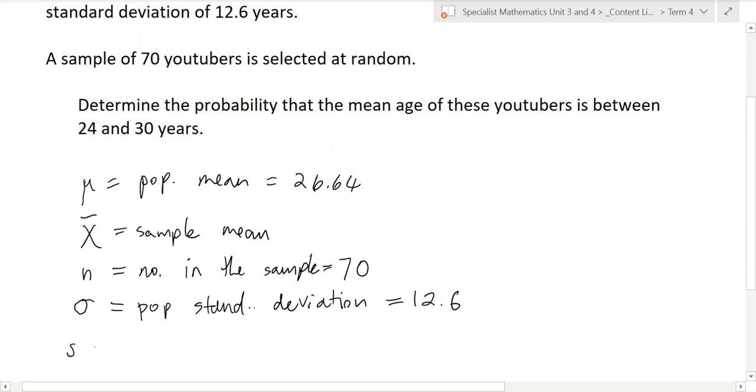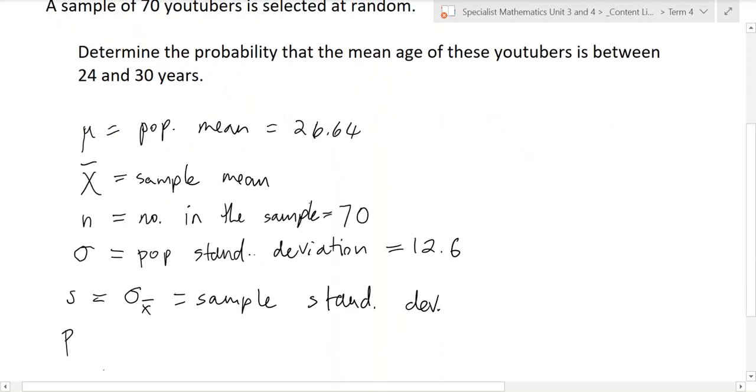Sometimes it's omega with an X bar like that. Another symbol is P. So that's the probability.